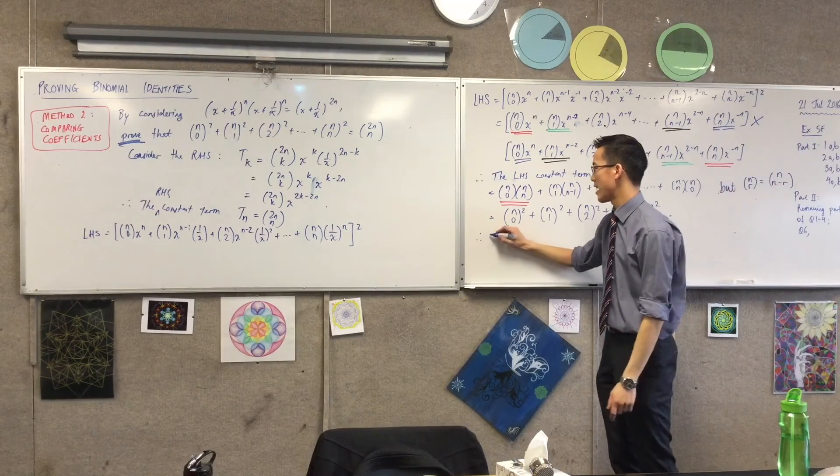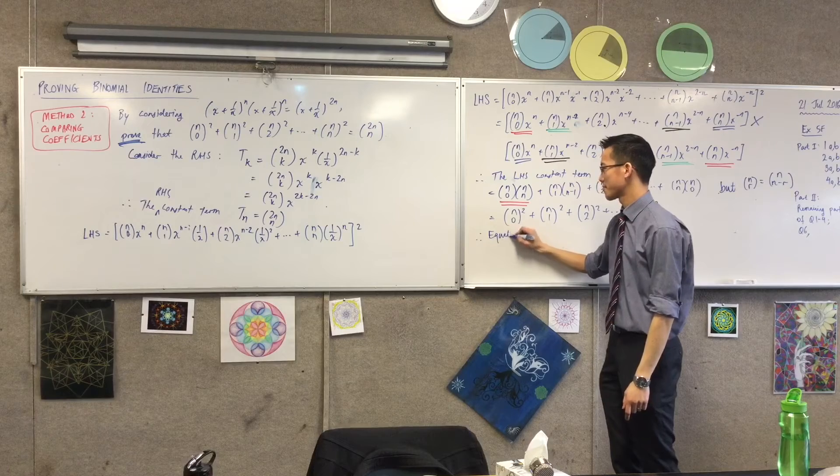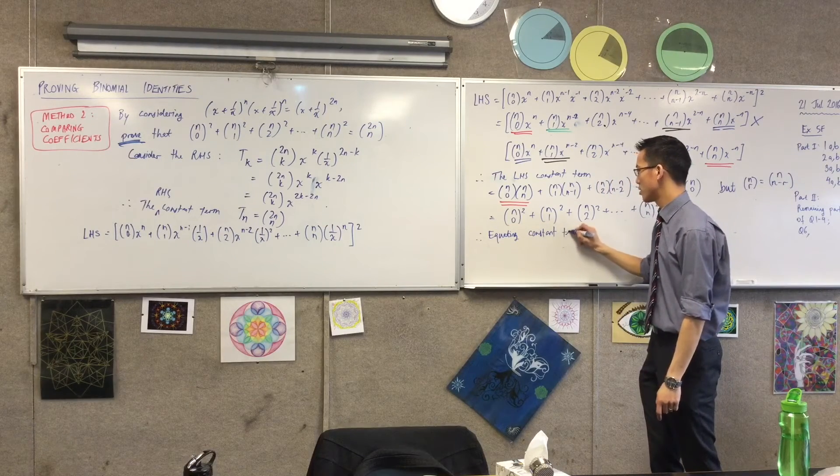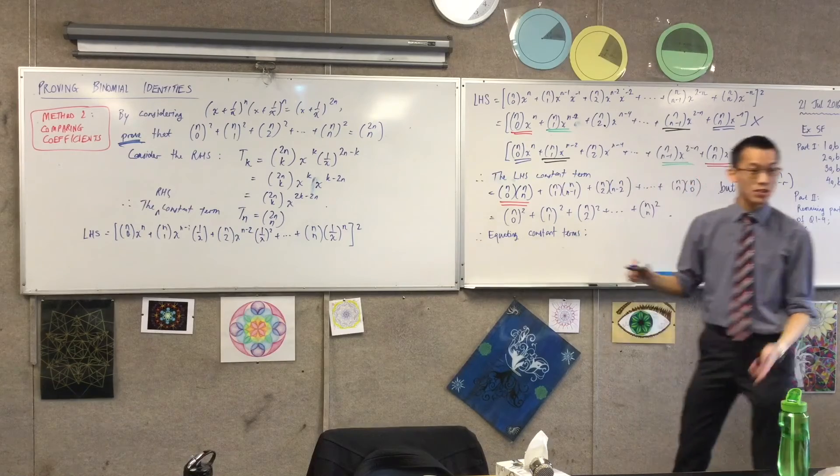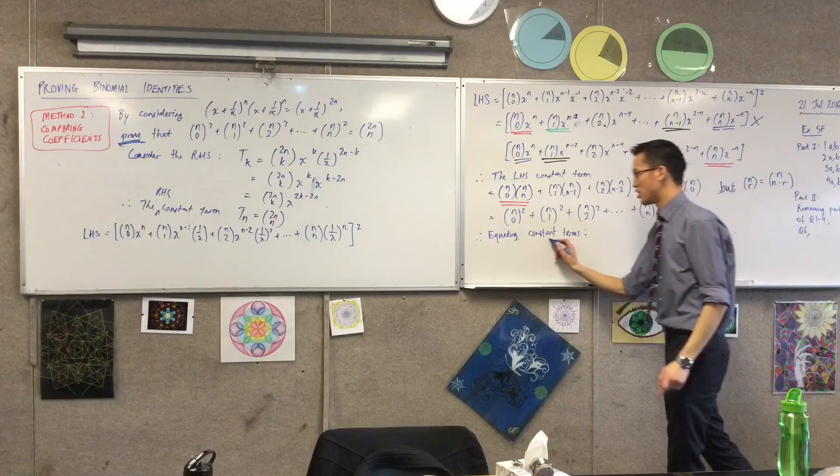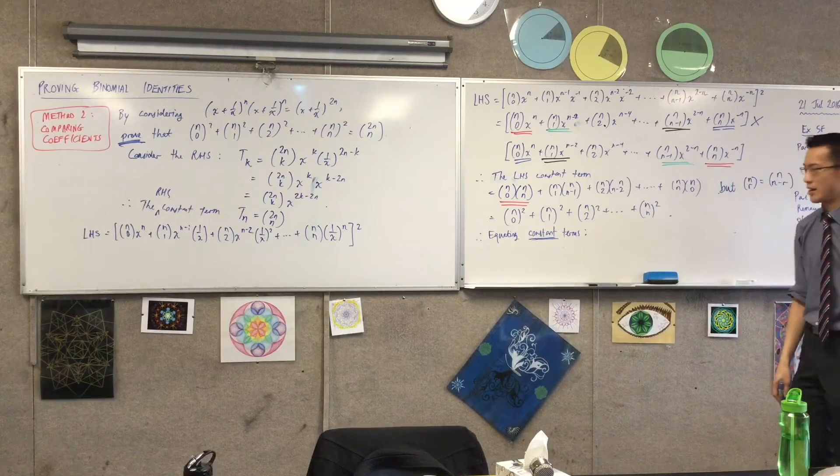But now I get to finally say equating constant terms. And I should say constant terms rather than just coefficients, because you might be equating the x squared terms or the x cubed terms or who knows what you're going to be equating. So to demonstrate understanding that you know what you're doing, tell me which terms you're equating. That's a really good idea.